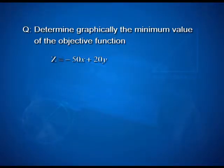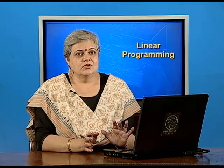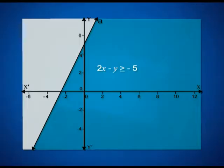We also have another problem today. So far we have been taking problems and finding solutions. But is there ever a situation when a solution does not exist? Possibly yes. Here is a question to explore that possibility. The problem asks us to determine graphically the minimum value of the objective function z = −50x + 20y, subject to three given constraints and the non-negativity restrictions. The problem is already formulated; we only need to find the solution graphically.